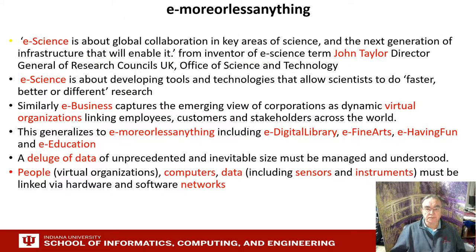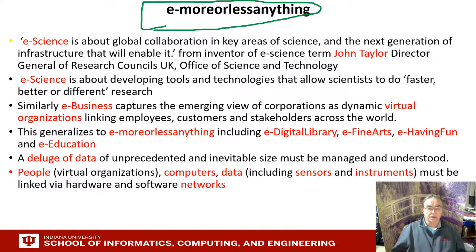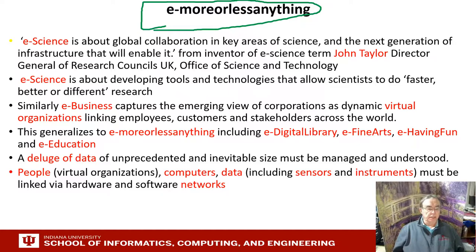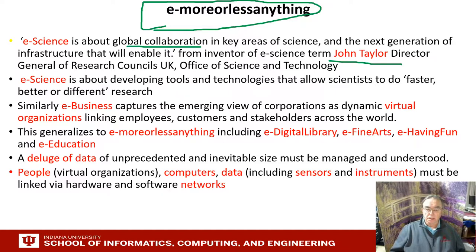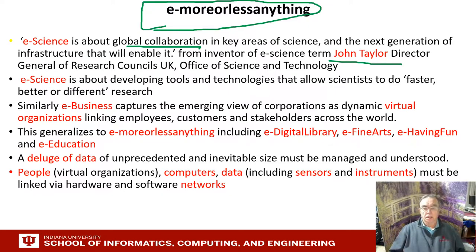E-science, which we can generalize to e-almost-anything, was a really hot area a few years ago but is now well understood. It came from John Taylor about 20 years ago and is all about electronically enabled science — using cyber infrastructure to support science. That's why these tools and technologies would be called cyber infrastructure in the US. They need to do better, faster, different research.